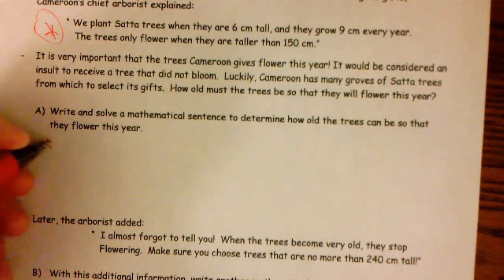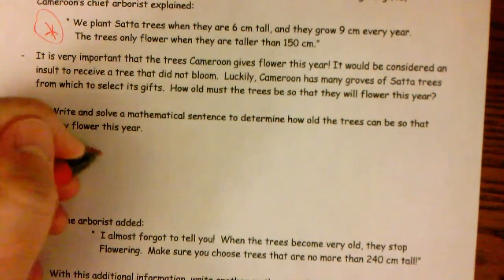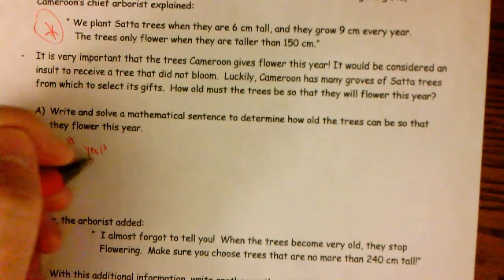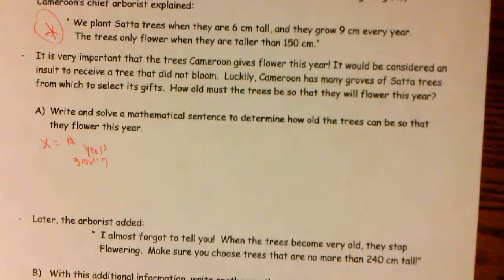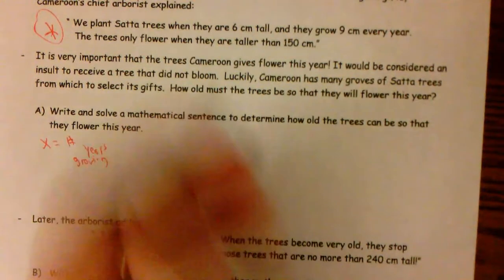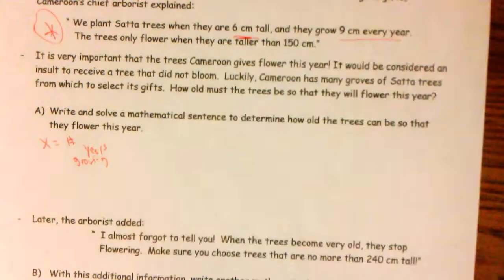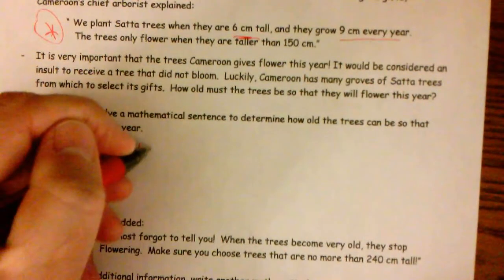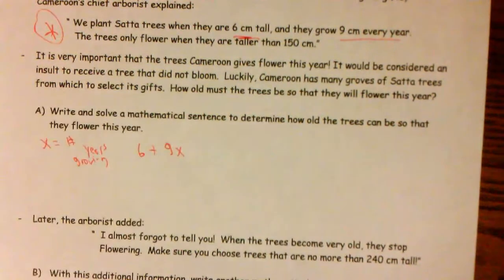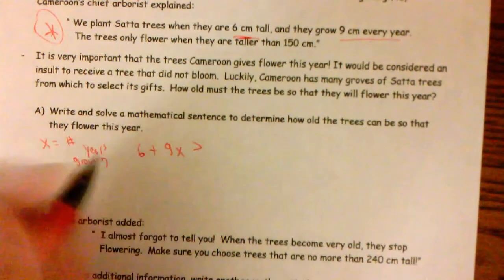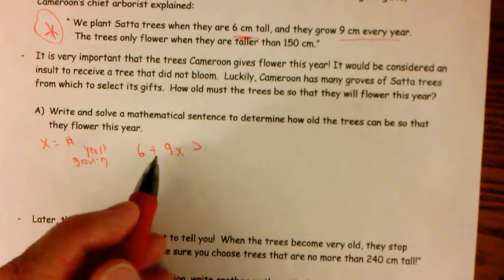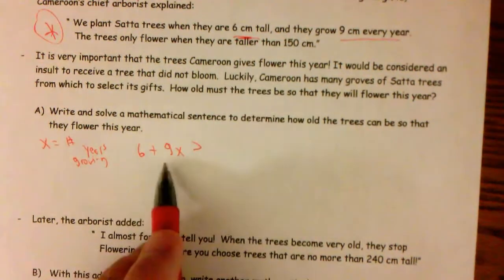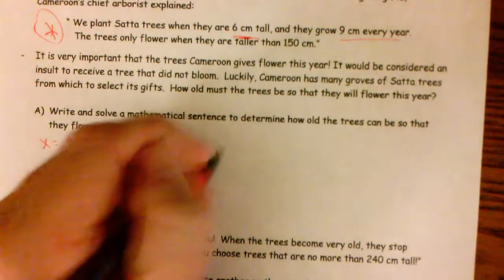All right. So I think if I make X the number of years growing, then I can set up an inequality for when or what trees will flower. Let's see. I think my inequality would be six plus nine each year. So six centimeters plus nine centimeters times the amount of years it's been needs to be greater than. And so this would be their height at any given time. And they need to be taller than 150. So I need this to be greater than 150.